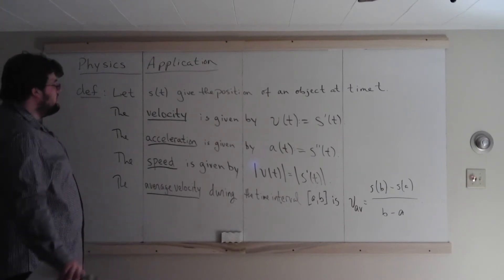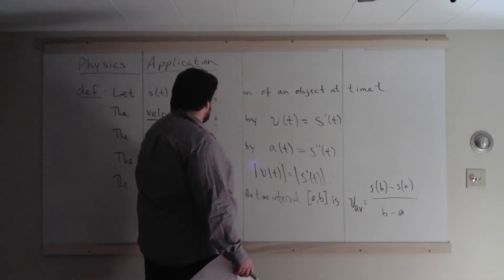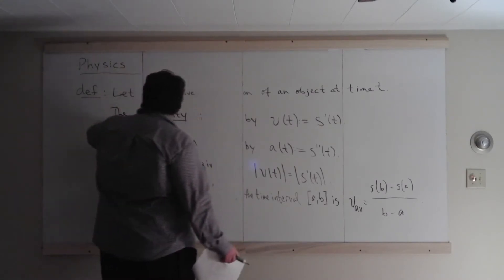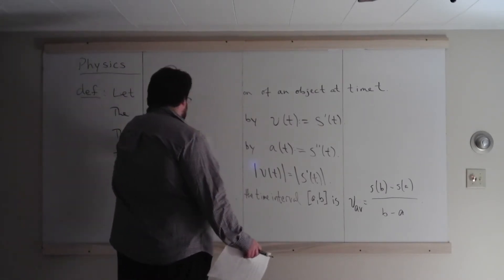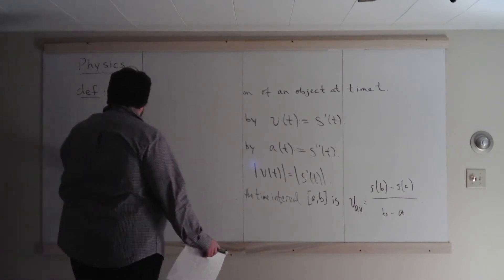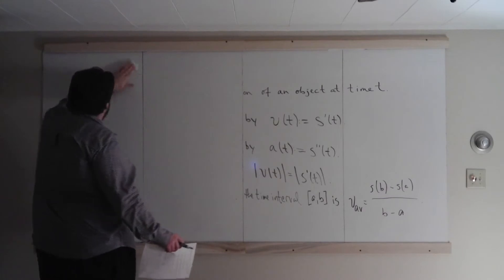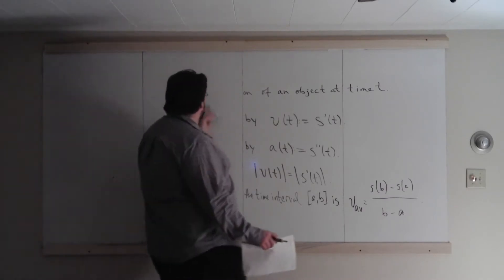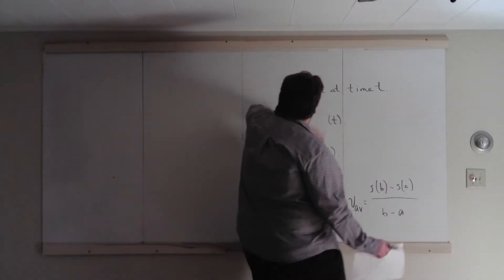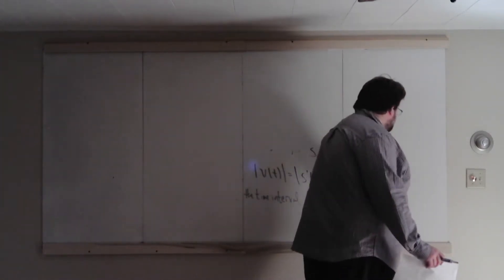These are just by definition. Let me include one diagram to motivate this definition, in particular the velocity definition. Velocity remembers how position changes as time changes, and it could be positive or negative, because you could be walking forward or walking backwards. It's given by how position is changing as time is changing.